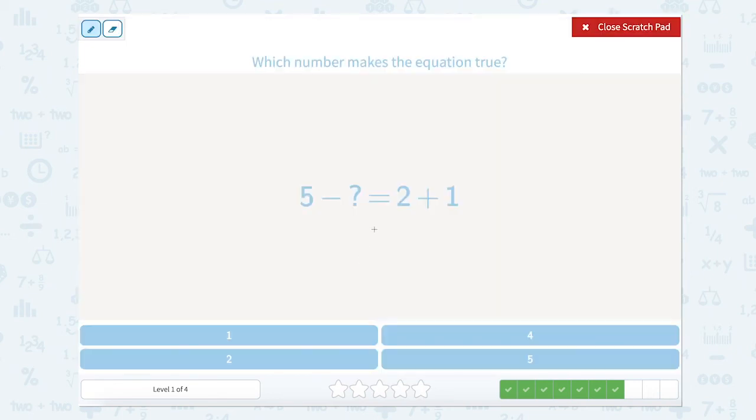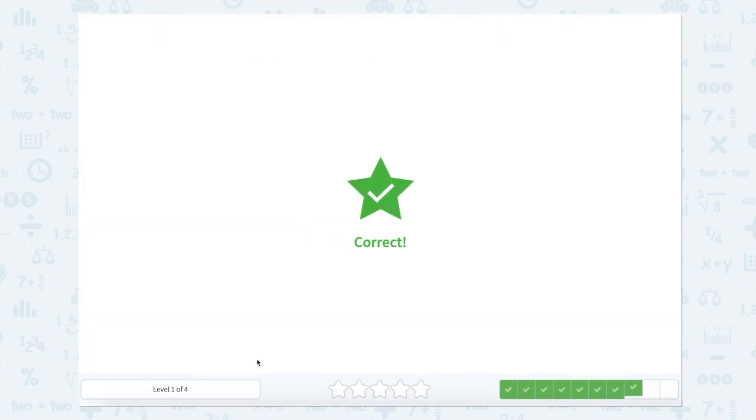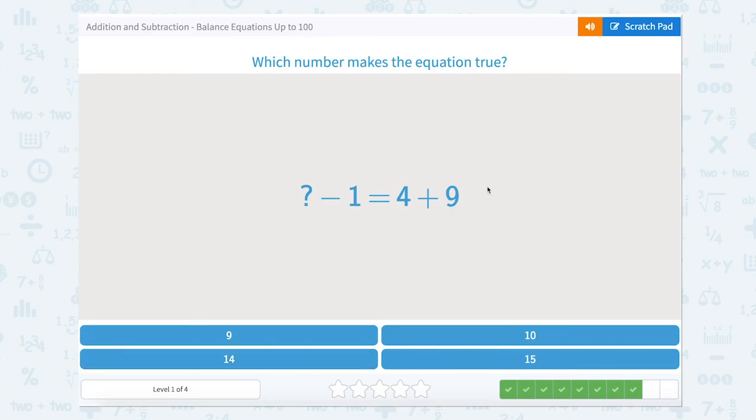Again we have an equal sign that has two sides. One side here, one side here. This side has two numbers we can solve for. 2 plus 1 equals 3. So 5 minus something equals 3. Well, if I have 5 and I take away 2, that would give me 3. So close that scratch pad, click 2, and let's keep going.